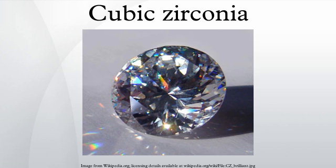Cubic zirconia is the cubic crystalline form of zirconium dioxide. The synthesized material is hard, optically flawless and usually colorless, but may be made in a variety of different colors. It should not be confused with zircon, which is a zirconium silicate.